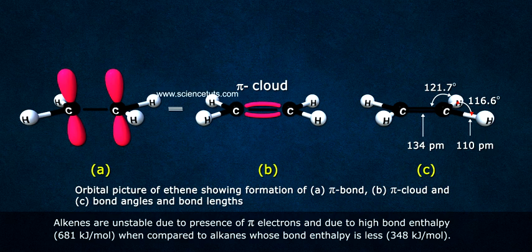Alkenes are unstable due to high bond enthalpy, 681 kJ per mole, when compared to alkanes whose bond enthalpy is less, 348 kJ per mole.